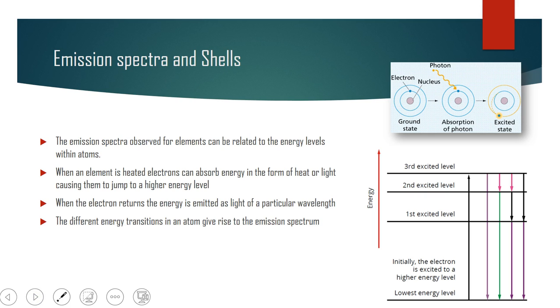When we look at the emission spectra, which you're familiar with from doing flame color tests, the emission spectra observed for elements can be related to the energy levels within the atoms. When we heat an atom or element, electrons can absorb this energy in the form of heat or light and jump to a high energy level. They can start on the lowest energy, which would be our principal quantum number 1, and jump up to any available energy level within the shell. They can jump up and come back down, maybe in stages, but each time they come down, they're emitting energy, emitting photons of light.